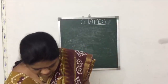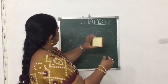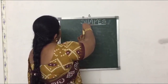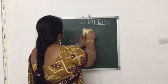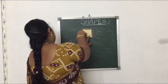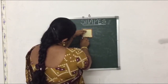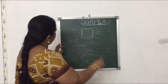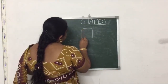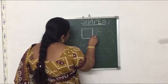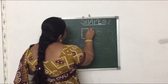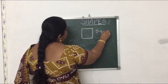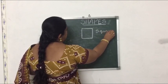See, what is the shape of this bread slice? Any guesses? This is a square. S-Q-U-A-R-E. Square.